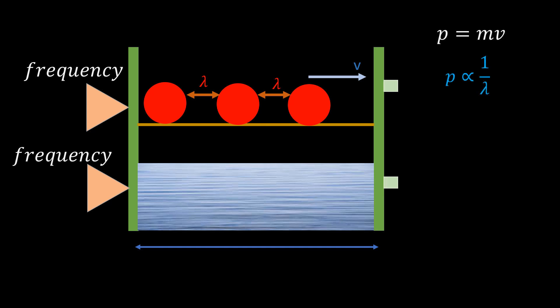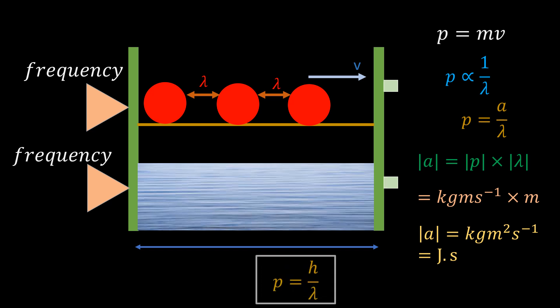Mathematically, we say that linear momentum is inversely proportional to wavelength. Taking away the proportionality sign, we have p equal to a on lambda. From unit analysis, the unit of a is equal to the unit of p times the unit of lambda. Inserting the units yield this. So, units of a is kilograms meter squared per second, which is the same as joules second, which is the unit of the Planck's constant, h. So, we can write p equal to h on lambda, which is the de Broglie equation.